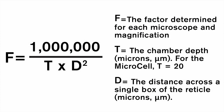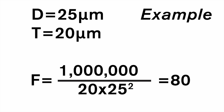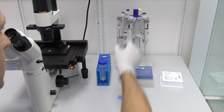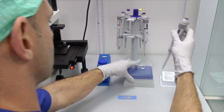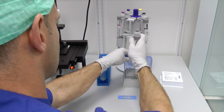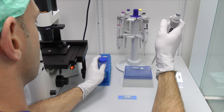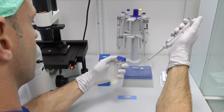Here is the formula for calculating the f-factor. Here is an example of how to determine the f-factor: d is measured to be 25 microns and t, the chamber depth, is always 20 microns. Then f equals 80 for that specific magnification. Place approximately 3 µL of liquefied semen sample into the clear loading zones. For the 4-chamber design, use 2 µL.